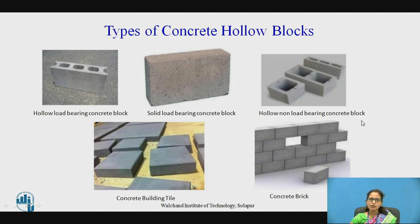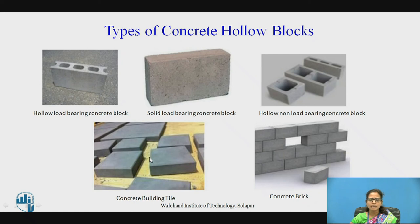Next is the hollow non-load bearing concrete block. This is used for fences and partition walls. There is no provision of steel reinforcement, and it is not intended to carry any extra load other than its own load. Next is the concrete building tile, made up of sand, cement, water, and pigments — not fired like clay tiles — and cured at a temperature of 60 degrees. The curing process is carried out so that the tiles can be transported easily, handled during manufacturing, and made stronger over time.